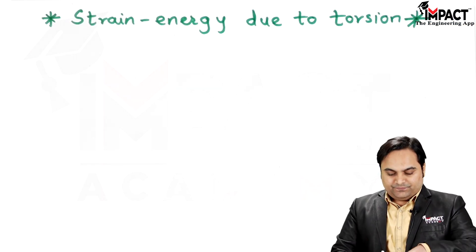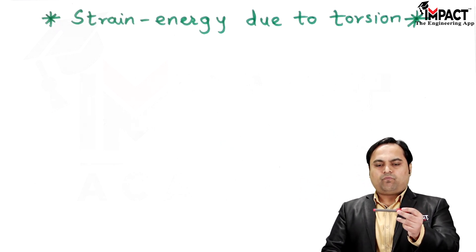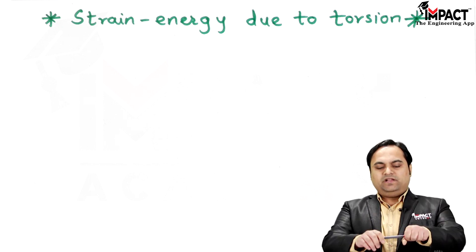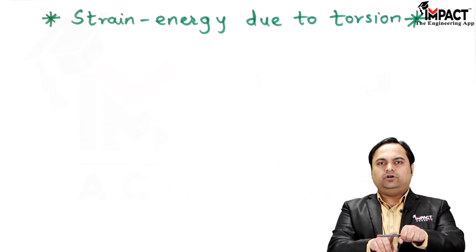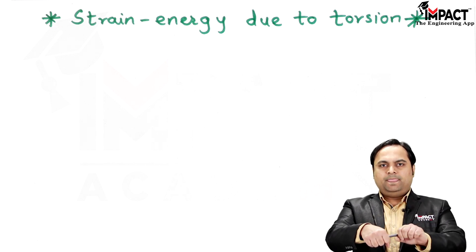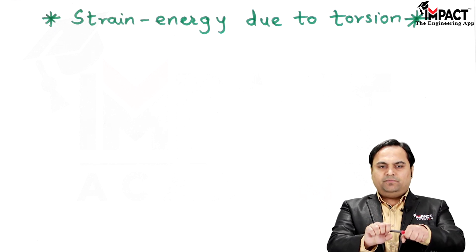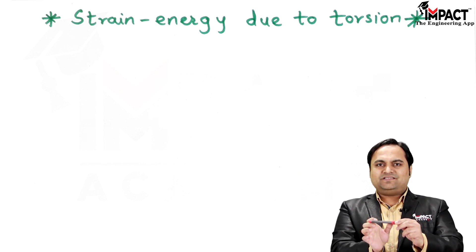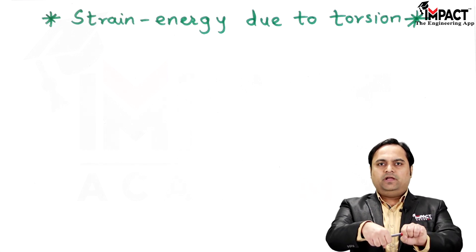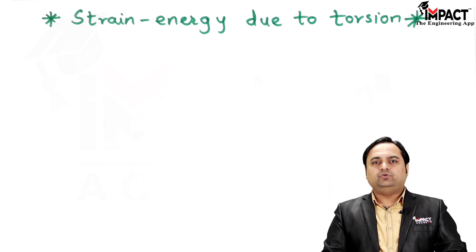Strain energy due to torsion can be explained in such a way: if we have a rod that has some modulus of elasticity, and I am applying torque to that rod in two directions — equal and opposite torque — then there will be twisting of the rod. Since there would be twisting, we can say that it is straining, meaning change in shape. When there is straining in the rod, some amount of energy would be stored in the rod due to the applied torque, and that energy is called strain energy due to torsion.